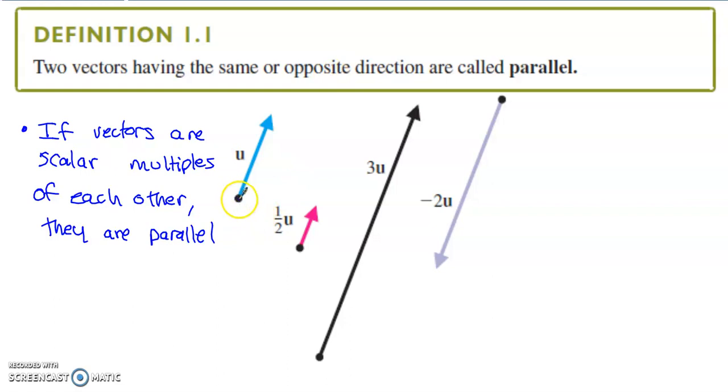If you think about it this way, if you extend vector u infinitely in the opposite direction, this line would be parallel to any of these other lines. So vectors that travel the same direction or opposite directions are parallel to each other.